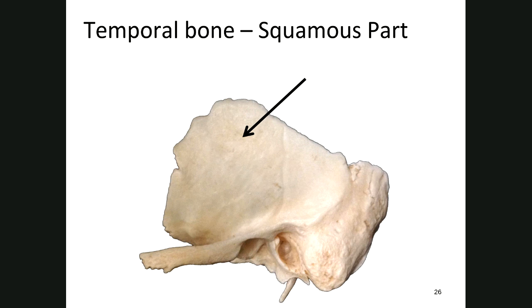Here is the temporal bone all by itself. Like the frontal bone, there's a flat portion to the temporal bone — we refer to that as the squamous part of the temporal bone. You should be able to tell if this is the left or right temporal bone. This process on the temporal bone always faces anteriorly, and the mastoid process is always on the posterior end of the bone.